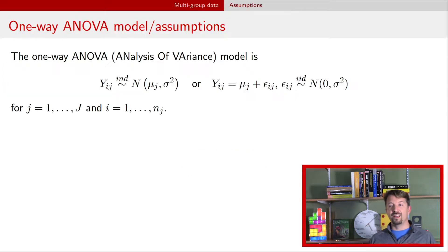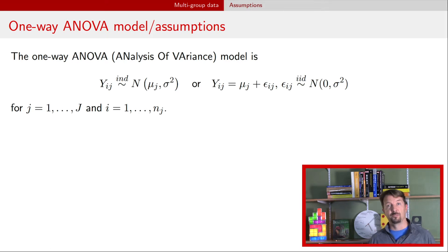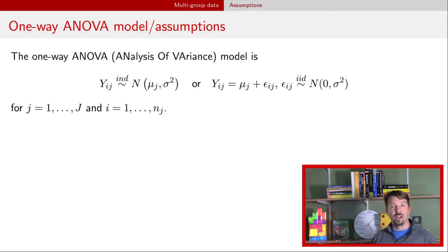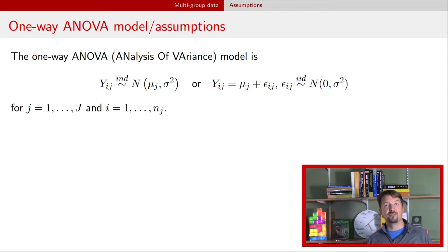ANOVA stands for analysis of variance, although that's a little bit of a misnomer because it's really talking about analysis of different means amongst different groups, although it is an analysis of the variability around those means. The ANOVA model has observations Y that are grouped by the subscript J, and each of those groups has their own mean mu J, but there's a constant variance sigma squared around those means.